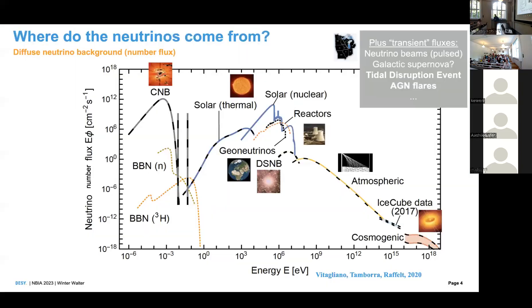This is one of the famous plots showing the diffuse neutrino flux — neutrino number flux per square centimeter per second as a function of energy. You see different contributions: the cosmic neutrino background, solar and geo neutrinos, diffuse supernova neutrinos, reactor neutrinos. At higher energies you find atmospheric neutrinos with a decaying spectrum, and at the highest energies the IceCube neutrino telescope neutrinos, and possibly cosmogenic neutrinos. Apart from diffuse fluxes, we also have transient fluxes like accelerator beams, galactic supernovae, and tidal disruption events.